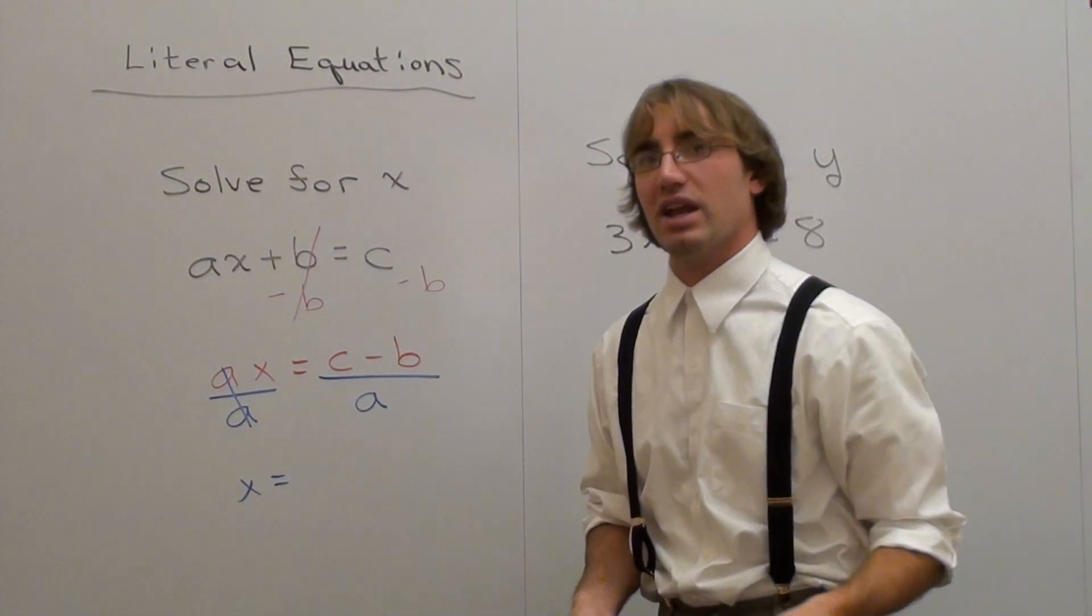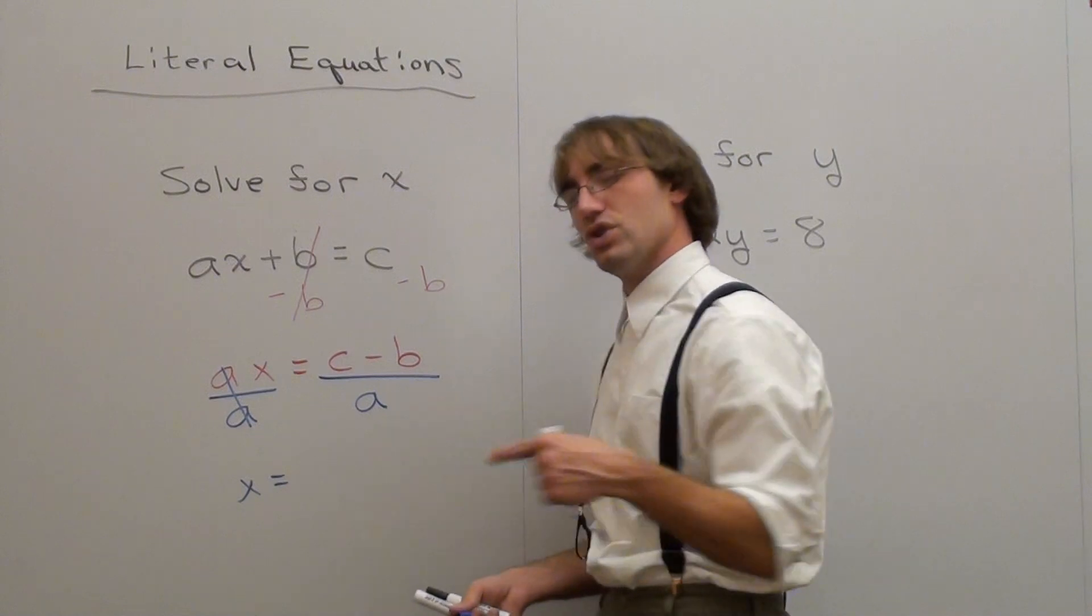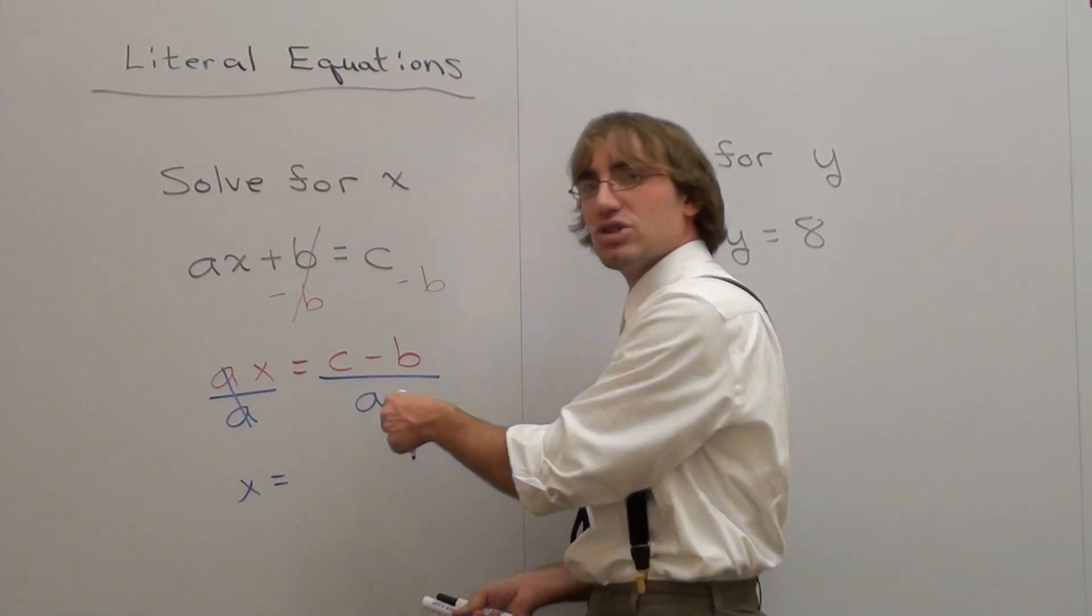a is canceled. They become one, one x or x. x equals, now I'm going to show you a sophisticated way to do it. There's one denominator, and I've shown you this before. You can't do it when there's two denominators, but you can do it when it's one.